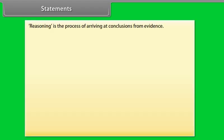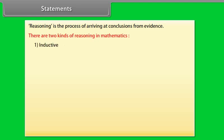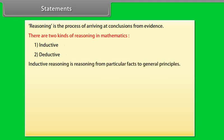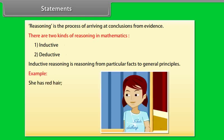Reasoning is the process of arriving at conclusions from evidence. There are two kinds of reasoning in mathematics: inductive and deductive. Inductive reasoning is reasoning from particular facts to general principles. For example: She has red hair, therefore she has a temper.